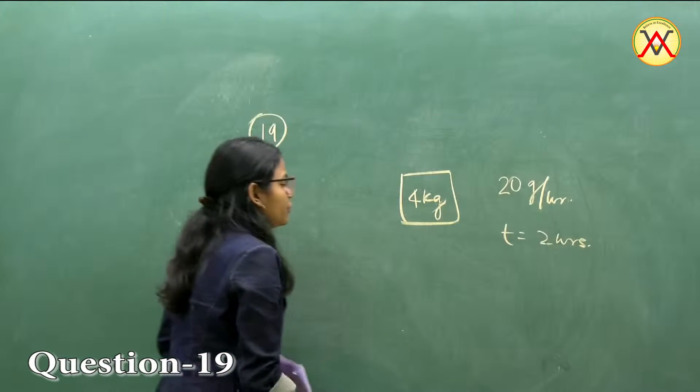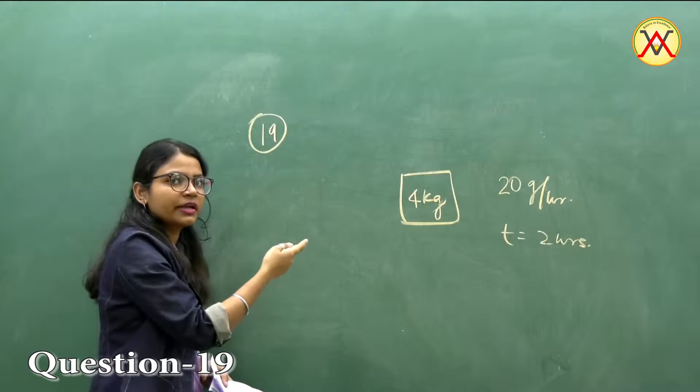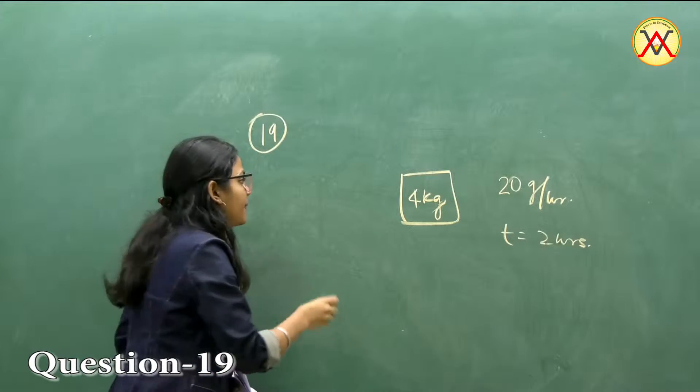So that will be 20 into 2. Simply we apply heat gain equals to heat loss principle here.